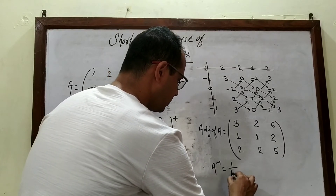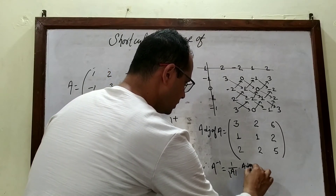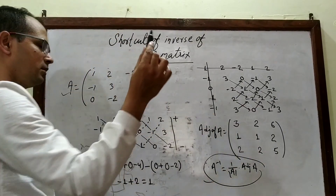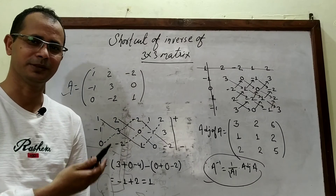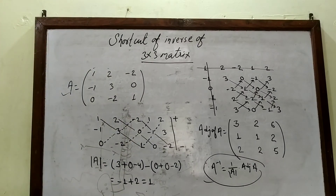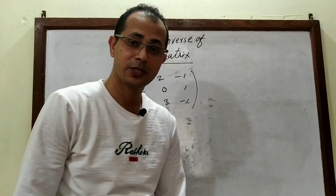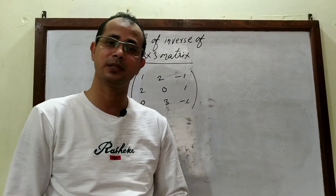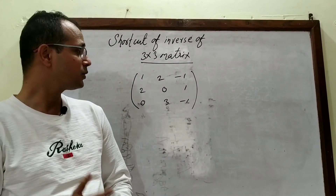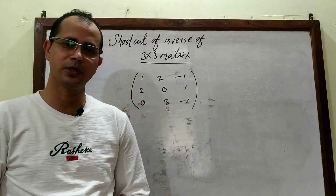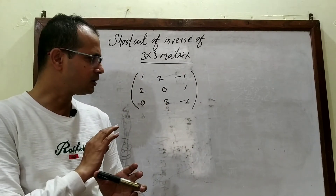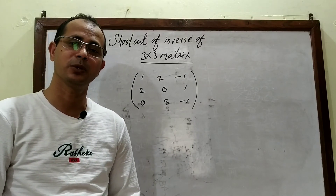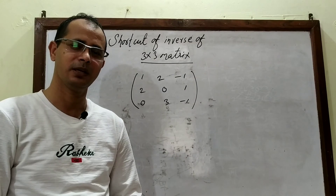Now you can easily find the inverse: A inverse equals 1 over the determinant of A, multiplied by the adjoint of A. Since the determinant is 1, the inverse equals the adjoint matrix directly. Students, this shortcut will save your time and can also be used to verify answers in board examinations and for objective questions. In the next video I will be coming with different shortcuts. Have a nice time, see you!